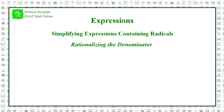Here's the second example: 3 over 2 plus the square root of 2. In this case, we rationalize the denominator by multiplying it by its conjugate. The conjugate of an expression like this one is the same expression but with a plus sign replaced by a minus sign, or vice versa. Thus, the conjugate of this denominator is 2 minus the square root of 2.